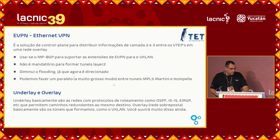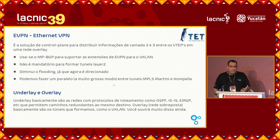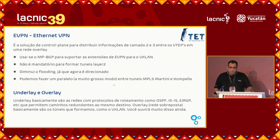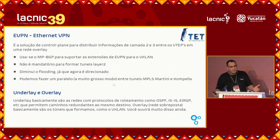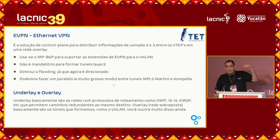EVPN is not mandatory to do Layer 2 tunnels, but it reduces flooding. If we are going to have a multicast network or multicast tunnels, it is possible to think of a multicast network without the need for VPN, because otherwise there would be flooding and you wouldn't be able to do it across the whole network. We can compare the underlay and the overlay: underlays are the networks with routing protocols that provide redundant paths to destination, while the overlay is created on top of an existing network.